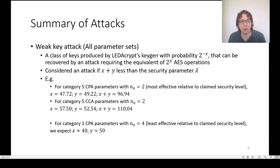For example, with category 5 CPA parameters with N0 equals 2, which is where our attack is strongest relative to the claimed security level, we have one in 2 to the 47.72 keys being found in time equivalent to 2 to the 49.22 AES operations. And there, X plus Y is 96.94, which is significantly less than the 256 claimed by the submission.